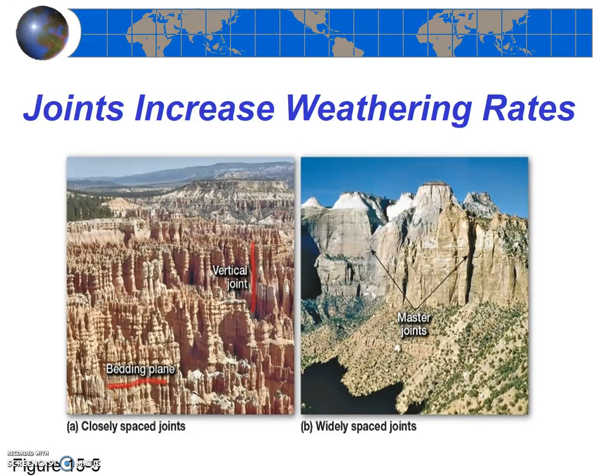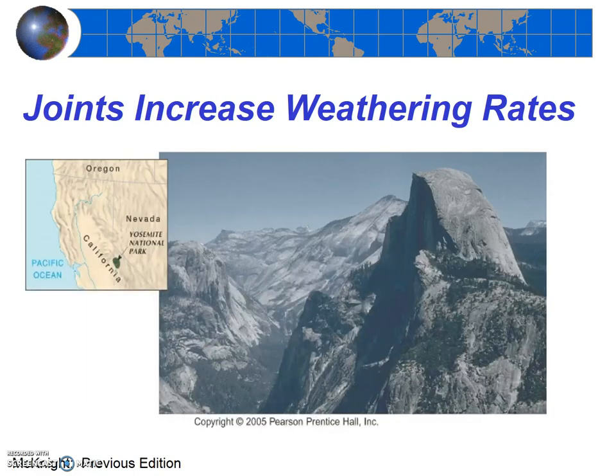Joints can form as igneous rocks cool, or as any rock unit is exposed to stress. Some rock units have master joints — simply large joints that extend for long distances. In textbook figure 15.4 shown here, you can see how joints impact the weathered landscape. Let's also consider Half Dome. We can see lots of evidence of exfoliation, but the sheer cliff of Half Dome is a joint. A glacier did not carve Half Dome. Rather, a joint existed, and likely water got into it — likely frost wedging, and perhaps root wedging, and perhaps chemical weathering all played a role. And then it was all followed by mass wasting, as the material on one side of the joint plummeted to the valley floor.